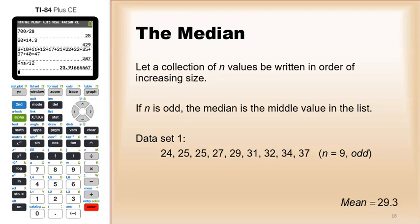Now there is a catch - exactly what you do depends on whether you have an even or odd number of data points. If you have an odd number of data points, it will be the number in the middle. There'll be a number where there are equal numbers below it and above it.